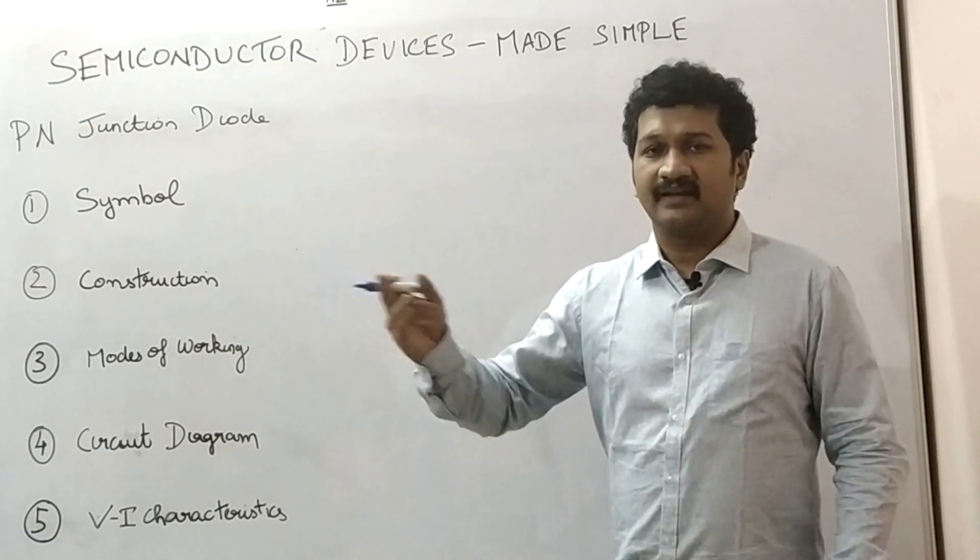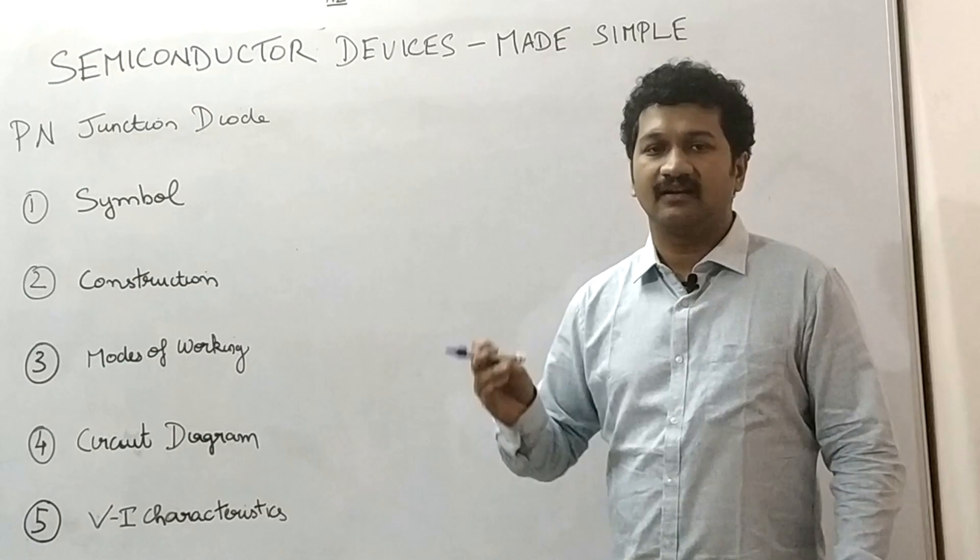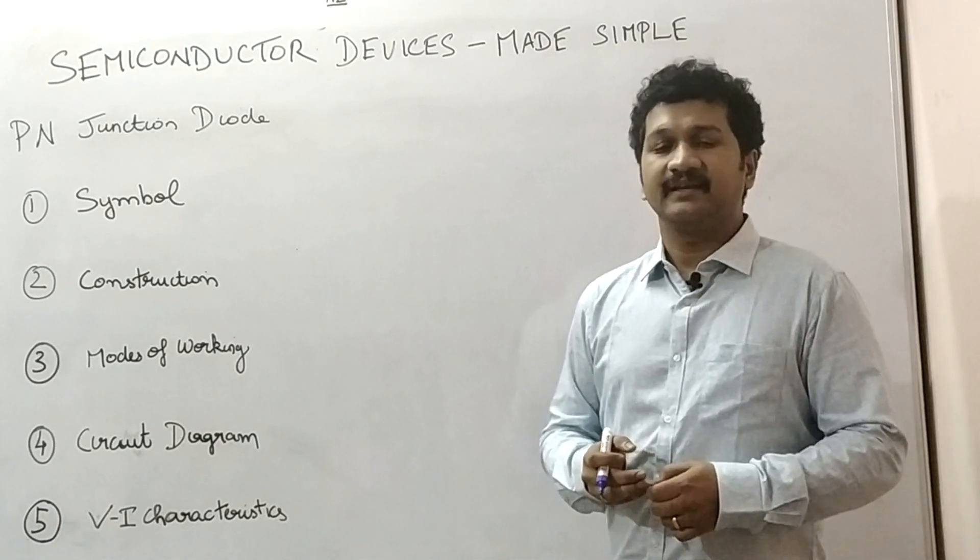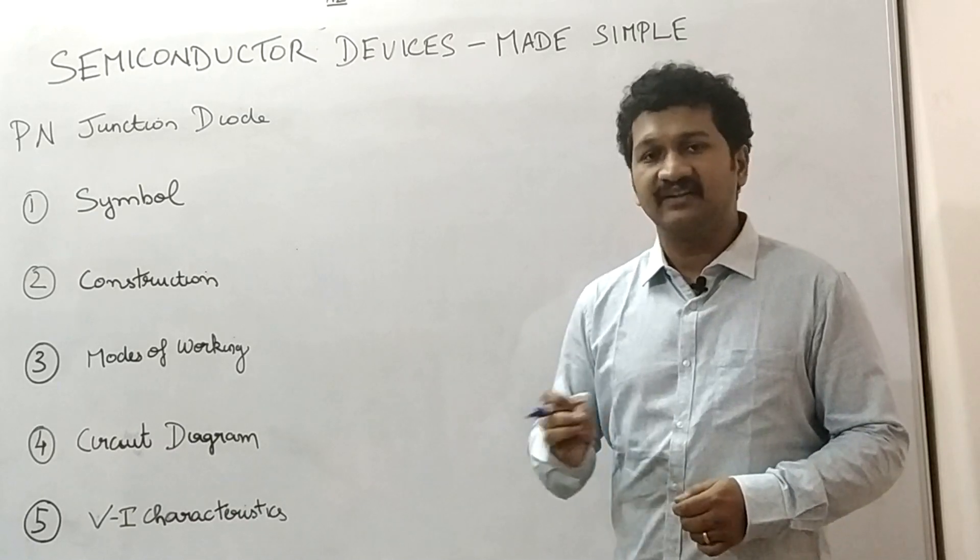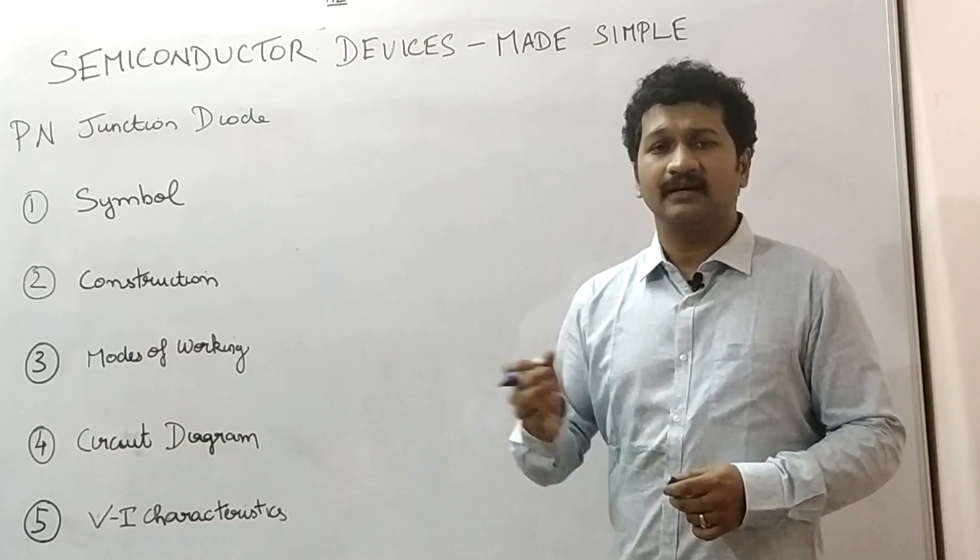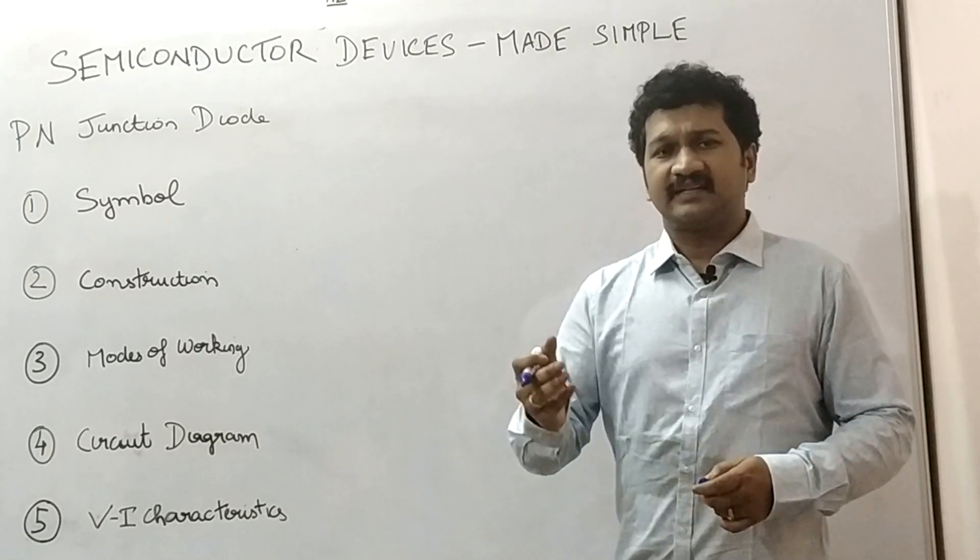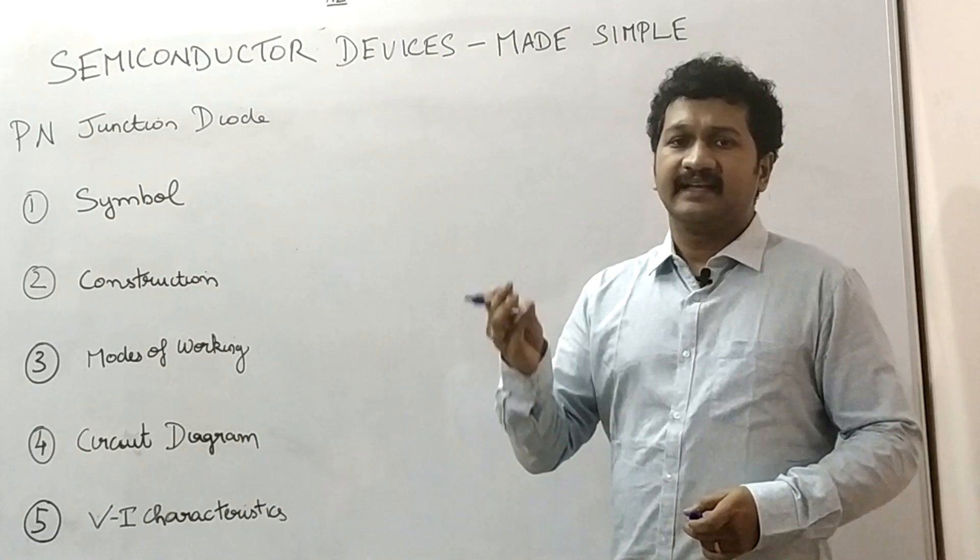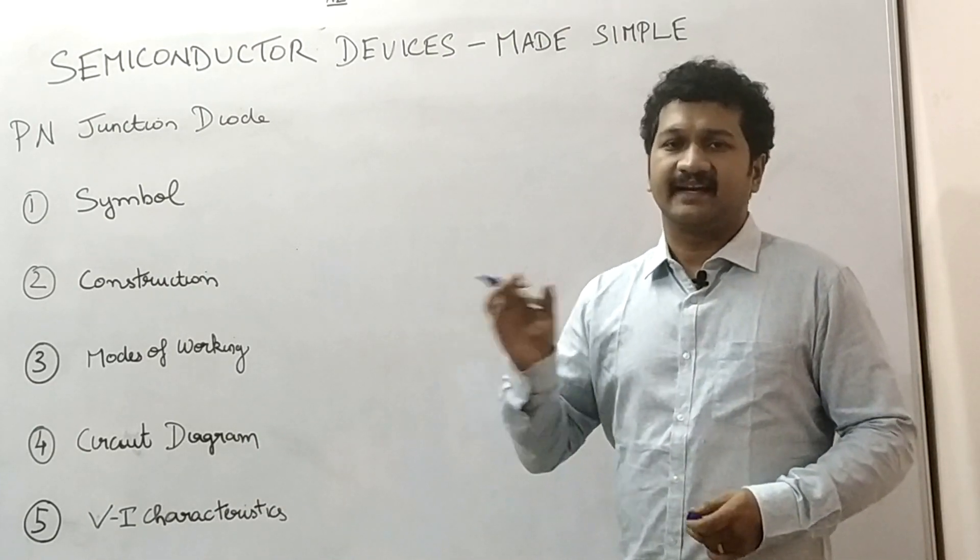Two-terminal devices are diodes like PN junction diode, Zener diode, etc. And three-terminal devices are transistors like bipolar junction transistor, field effect transistor and so on. Also, I will be discussing about the thyristors. Thyristors are of three types: SCR, UJT and TRIAC.